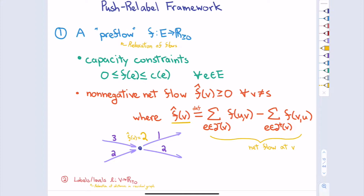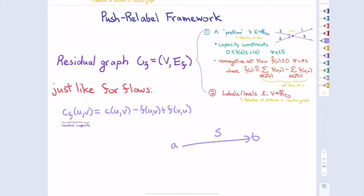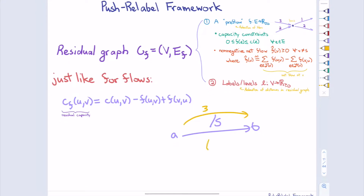We can still define a residual graph with respect to our pre-flow, just like we did for regular flow. If from point A to point B I originally had capacity five and I send three units of flow, the residual graph will have capacity two in one direction and capacity three in the other — the reverse direction maps to reversing actual flow already sent. That concept transfers over exactly like before.